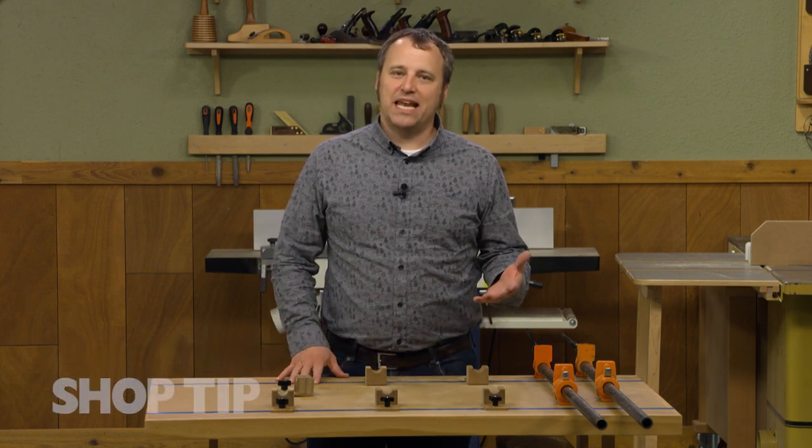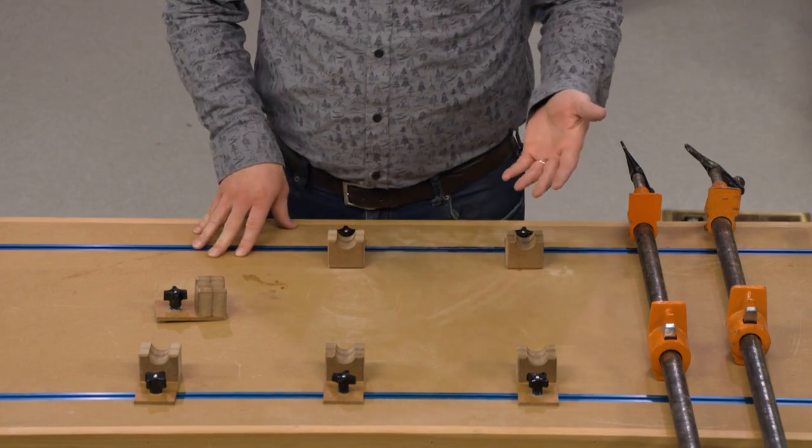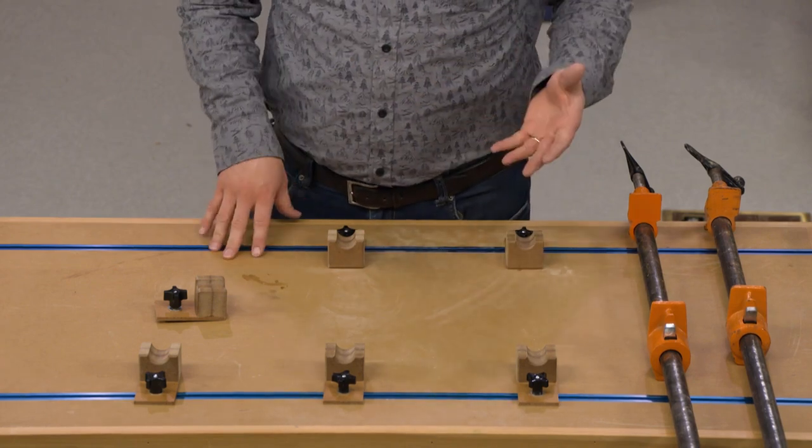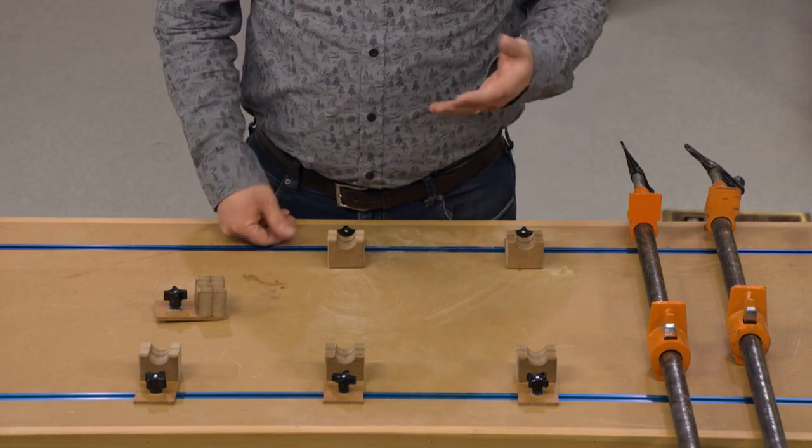As much as I'd like to have a dedicated glue up station in my shop, it's just not big enough. But one thing that I do have is a cart with some t-track that I installed in the top. It's perfect for setting up hold downs and stops when I'm assembling projects or need to use my biscuit joiner or things like that.